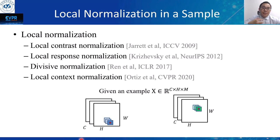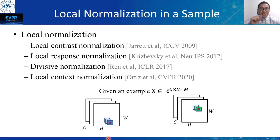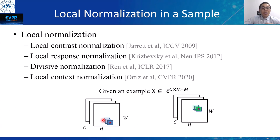LeCun et al. proposed local contrast normalization, which performs local subtractive and divisive normalizations, enforcing a sort of local competition between adjacent features in the feature map and between features at the same spatial location in different feature maps. Local response normalization proposes to scale the activation across feature maps at the same spatial position, calculating variance only along the channel direction. Divisive normalization generalizes the neighborhood partition of these local normalization methods as a general framework.